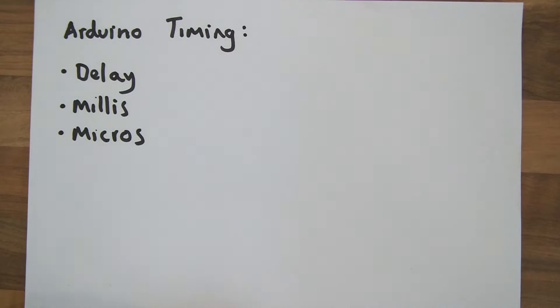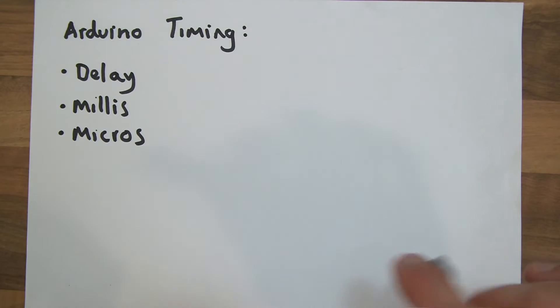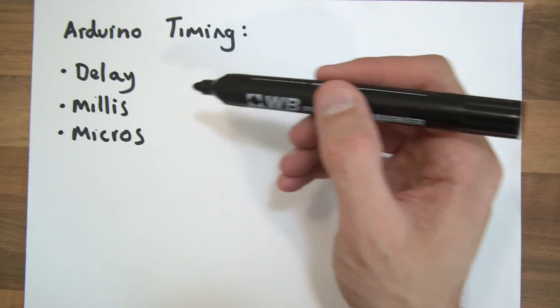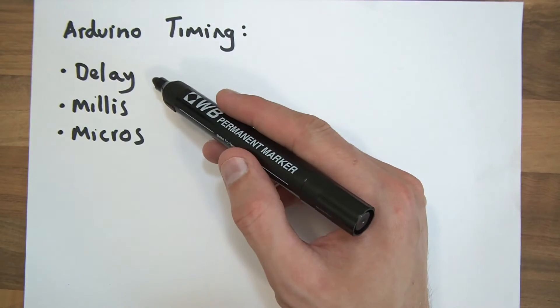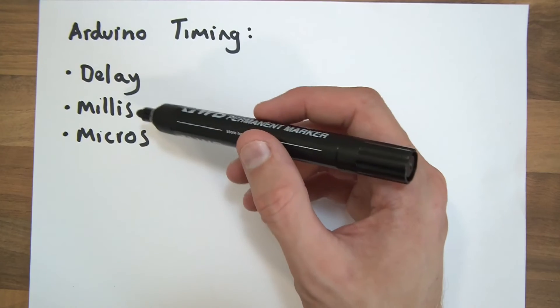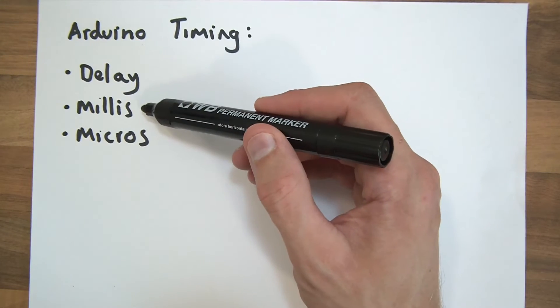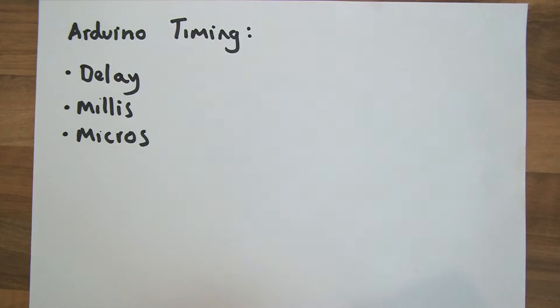So anyway, we've got three different words, keywords if you like, which I feel are important to understanding timing in the Arduino. These are the keywords you can use in your code: there's delay, millis and micros. And I'm going to explain what these are and why they're important, what they're for.